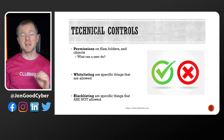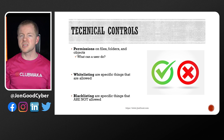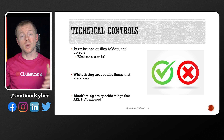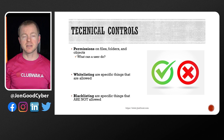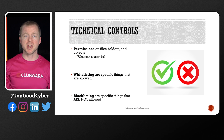Let's talk about some of the specific technical controls that we can implement. Permissions are the allowed actions that either a user or group has on objects, files, folders, systems, and so on. Permissions allow us to be very granular with what users can do. Whitelisting and blacklisting are useful to identify what's allowed and what's not allowed. Whitelisting is where we're only allowing certain things, and blacklisting is where we're rejecting specific things. It can be very hard to identify the specific things that we're trying to allow, but it can also be very hard to pick out the specific things that we're trying to reject.